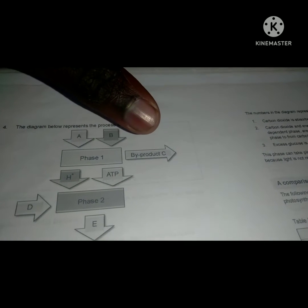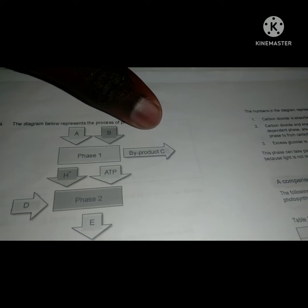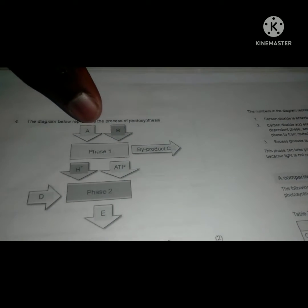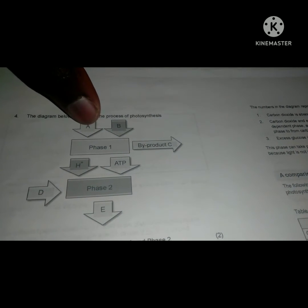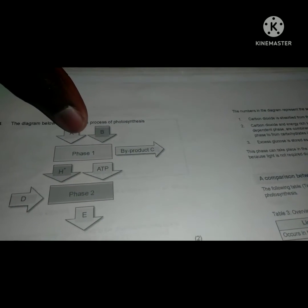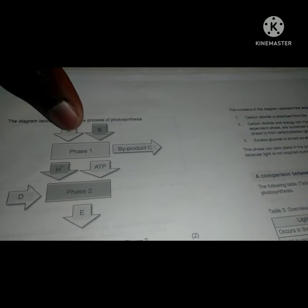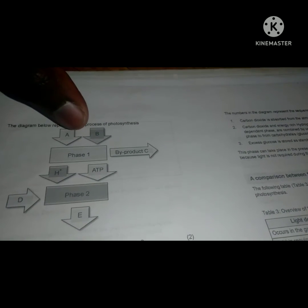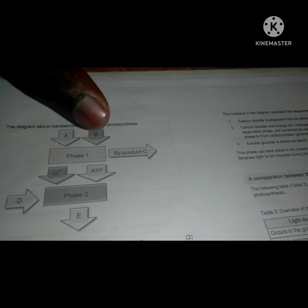So what is A? In this case A will be the radiant energy or the water because they did not really specify. This can be the radiant energy from the sun and this can be water, or vice versa. So A can be either the radiant energy or water, and B can either be that also.